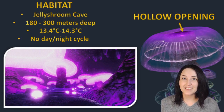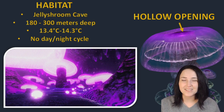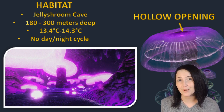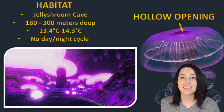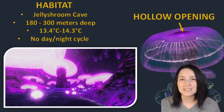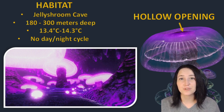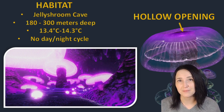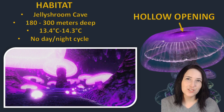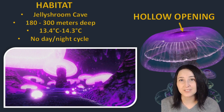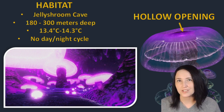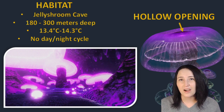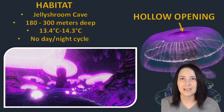The world of Subnautica is filled with amazing and wonderful creatures, and one such that we're going to be talking about today is the crab snake. To tell you a little bit about where the crab snake lives, it's in a place called Jelly Shroom Cave. This cave is roughly 180 to 300 meters deep, has a temperature fluctuation of maybe like one degree, and there's no obvious day or night cycle.